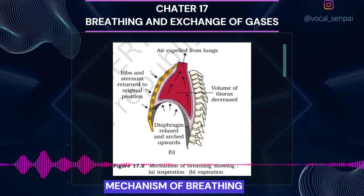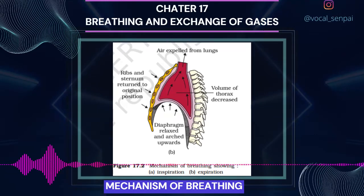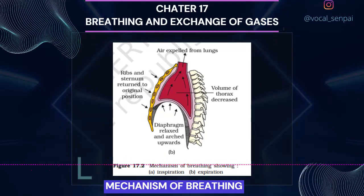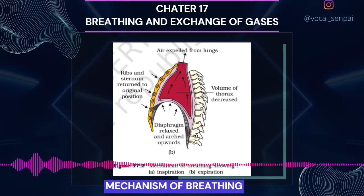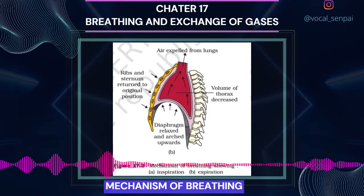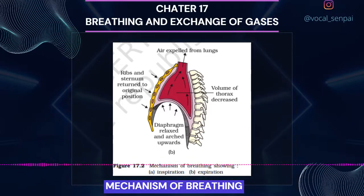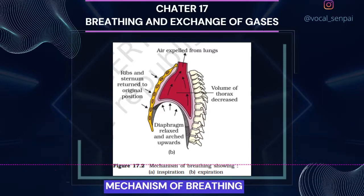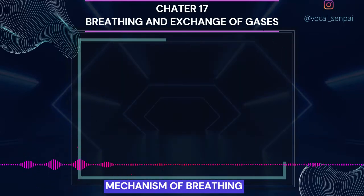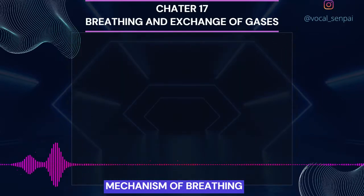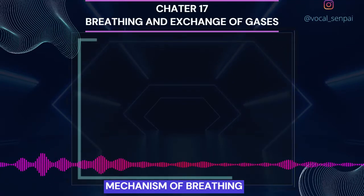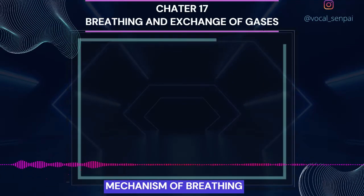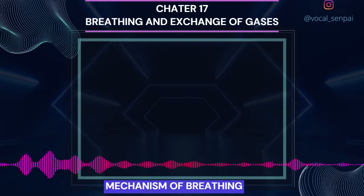We have the ability to increase the strength of inspiration and expiration with the help of additional muscles in the abdomen. On an average, a healthy human breathes 12 to 16 times per minute. The volume of air involved in breathing movements can be estimated by using a spirometer, which helps in clinical assessment of pulmonary functions.